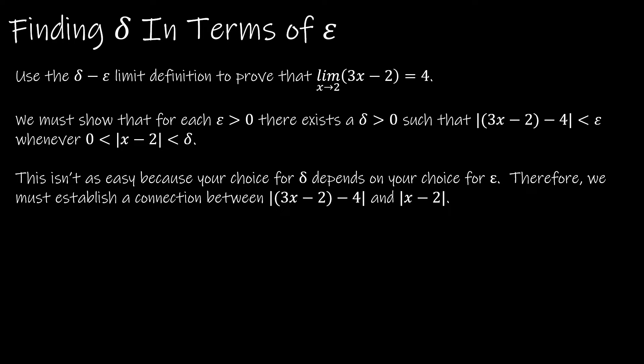What if we weren't given a value for epsilon? So on the last example, we knew that epsilon was 0.01. Even though they didn't specify this is the value of epsilon, they gave us that inequality already. So here, we don't have that inequality. We don't know what epsilon is. We don't know what delta is. We have to actually determine what delta would be in terms of epsilon. So what we have to do in this case, we're going to use the limit definition to prove that the limit as x approaches 2 of 3x minus 2 is equal to 4.